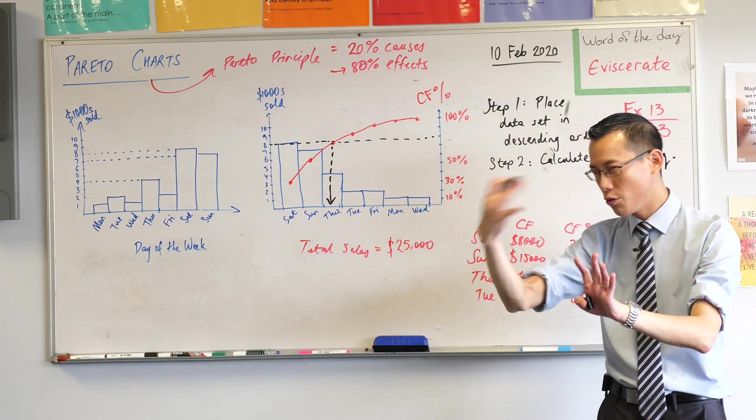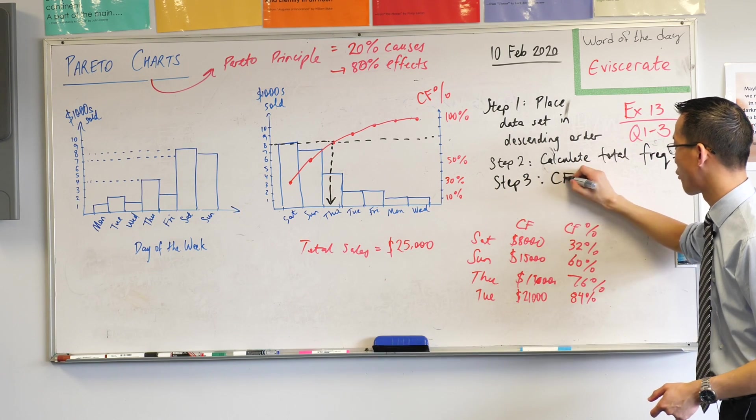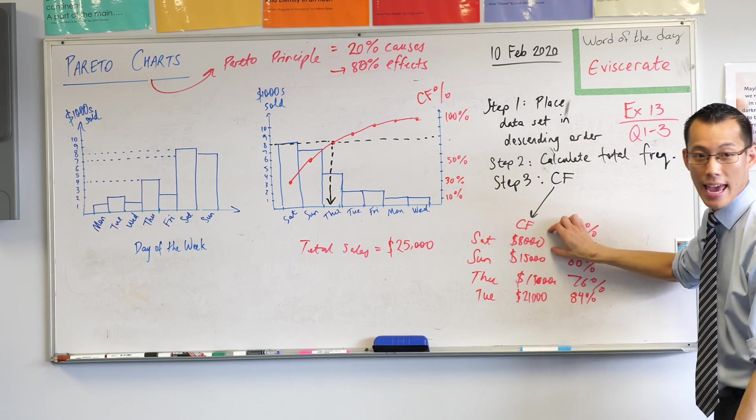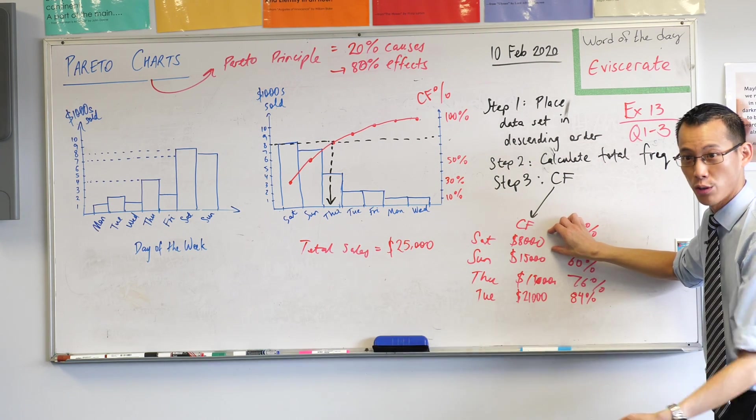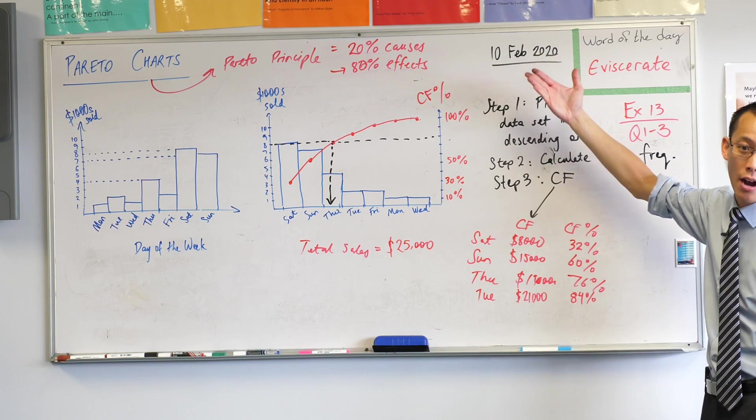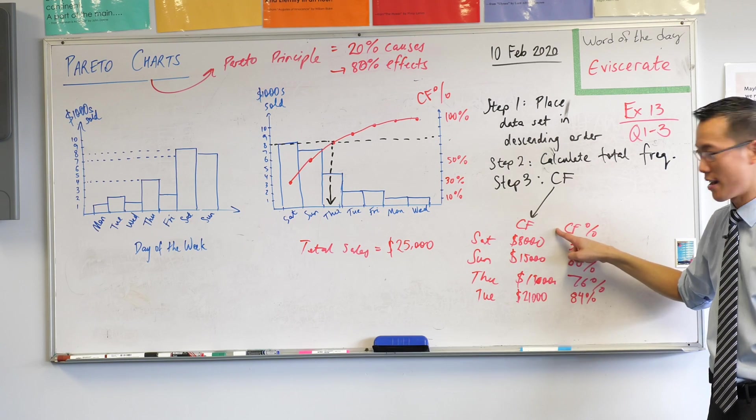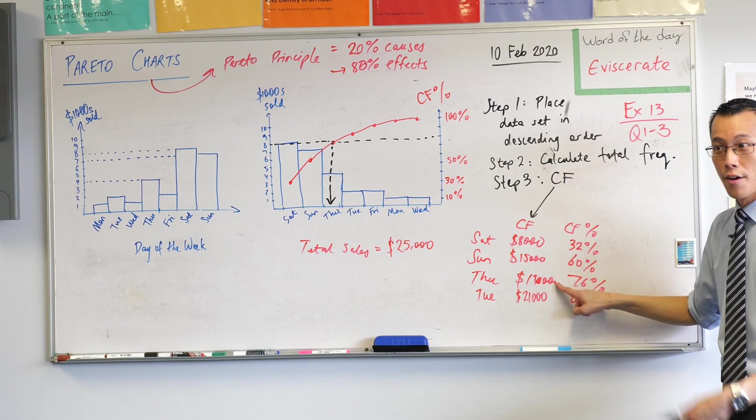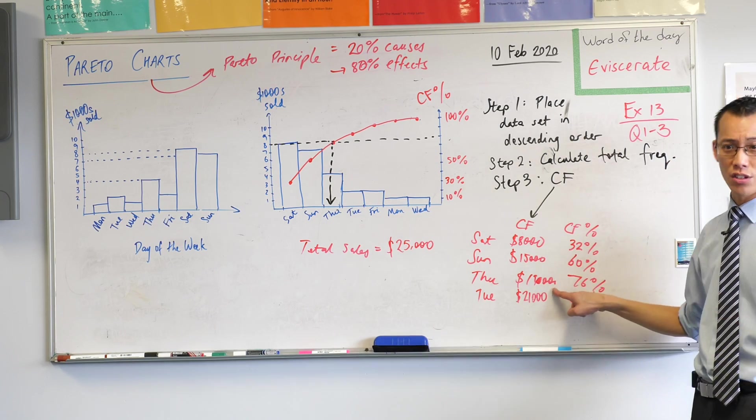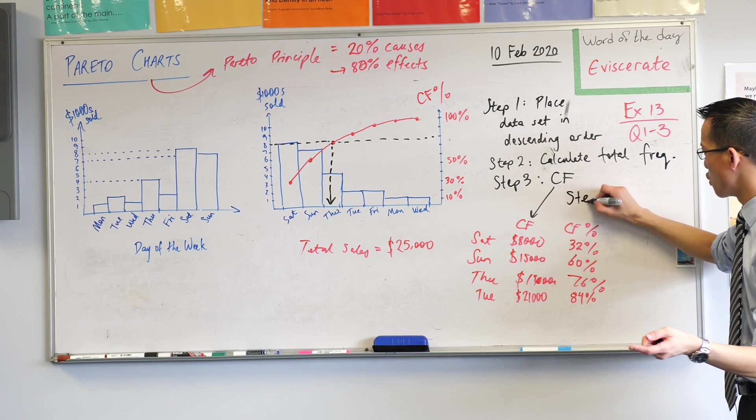So let's do the cumulative frequency. This thing here. You're doing it in order. You include that day's sales, patients, frequency. And then you add on whatever all the previous days are as well. So that's why this one includes the 7,000 on Sunday and the 8,000 on Saturday. This one includes the 4,000 on Thursday and everything from the previous days. What am I up to? The 2,000 on Tuesday and all the previous days. That gives you the cumulative frequency. And then the last step, the one you asked about is...